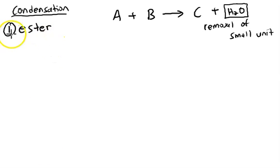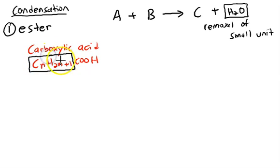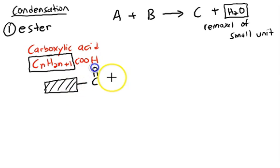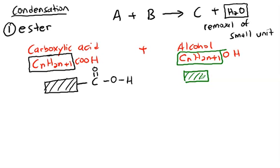Now look at ester formation. For the formation of an ester we need a carboxylic acid. When using the formula for polymerization, we ignore the carbon chain and replace it with a box, putting only the functional group — which is the –COOH end. The same goes for alcohol: we ignore the carbon chain (CₙH₂ₙ₊₁) and replace it with a green-colored box, keeping only the –OH functional group.